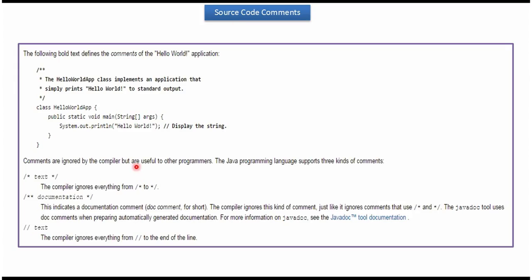There are three types of comments. The first one is a text comment which starts with slash star and ends with star slash. The second comment is a documentation comment which starts with slash star star and ends with star slash. And the third one is a line comment which starts with double slash.